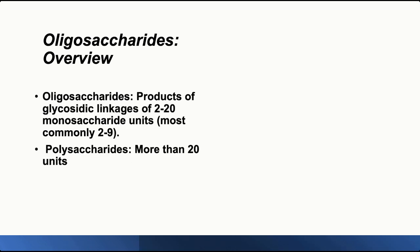Based on definition, oligosaccharides are a product of glycosidic linkage of 2 to 20 monosaccharide units, and in most cases oligosaccharides are made of 2 to 9 monosaccharide units. On the other hand, polysaccharides are composed of more than 20 units in most cases.